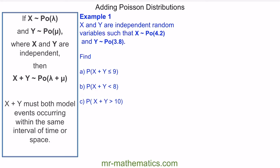In this video, we're going to cover adding Poisson distributions. If we have two Poisson distributions, x and y, where x has parameter lambda and y has parameter mu, and where x and y are independent, then x plus y has a Poisson distribution with parameter lambda plus mu. This is true where x and y must both model events occurring within the same interval of time or space.